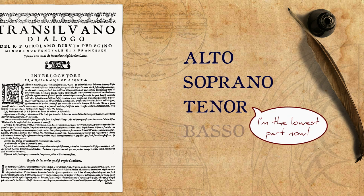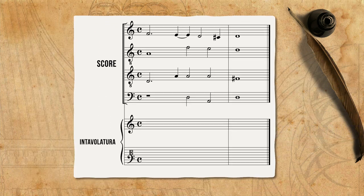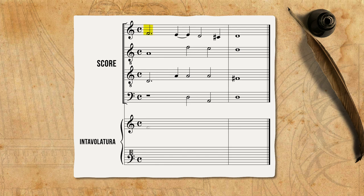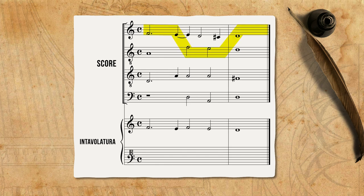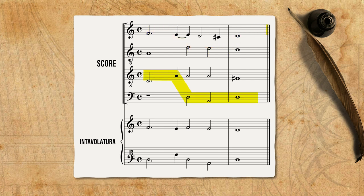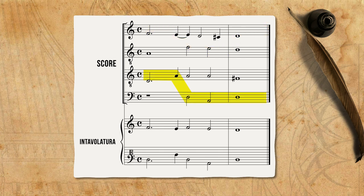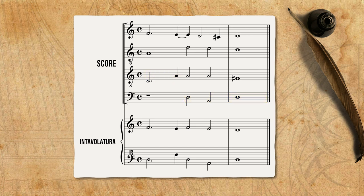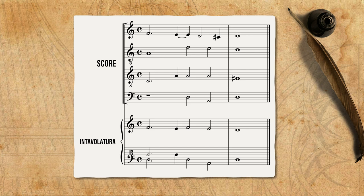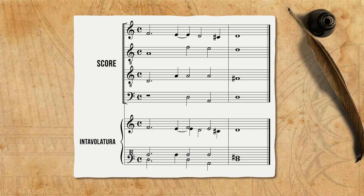And so, as you can see in this generic example, when we intabulate, we should first create a top part which constitutes the highest part at every given moment, and a low part which constitutes the lowest part at every given moment. Only then should we add the inner parts.